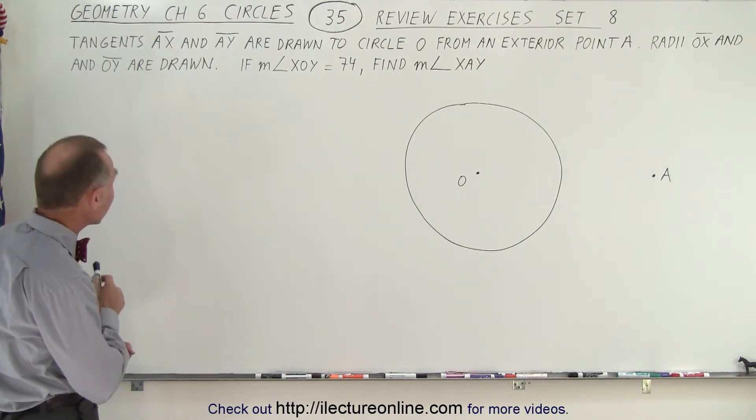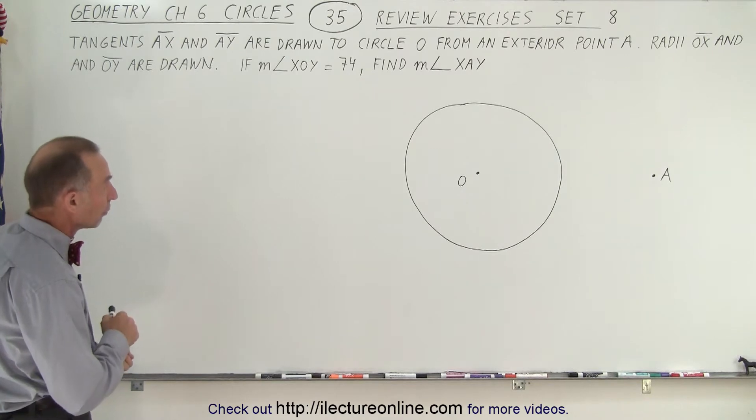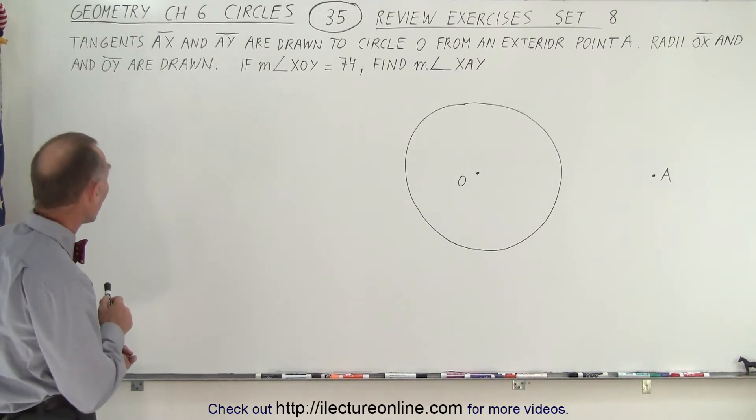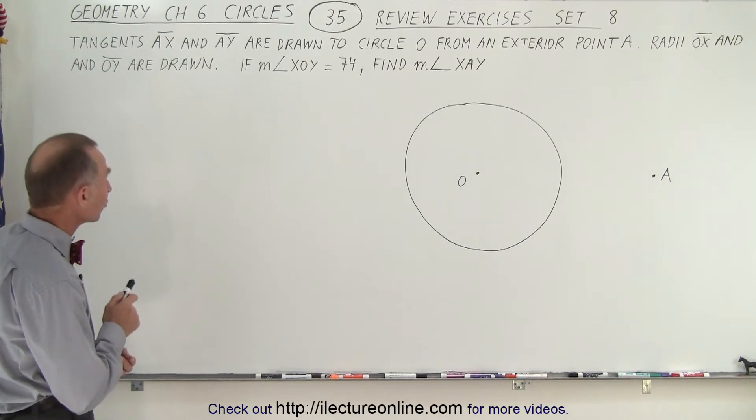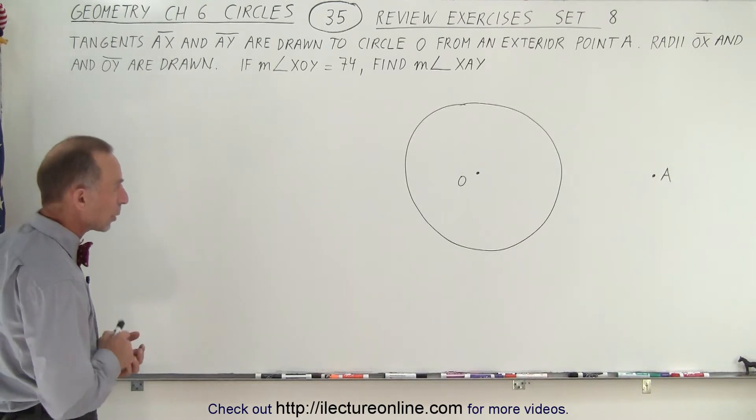Tangents AX and AY are drawn to circle O from an exterior point A. Radii OX and OY are drawn. If the measure from XOY is equal to 74, then find the measure of XAY.